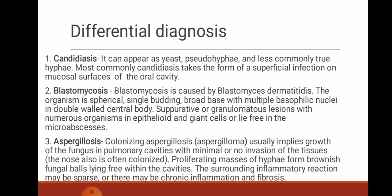The third differential is Aspergillosis. Colonizing aspergillosis usually implies growth of the fungus in pulmonary cavities with minimal or no invasion of the tissues. Proliferating masses of hyphae form brown fungal balls lying free within the cavities. The surrounding inflammatory reaction may be sparse, or there may be chronic inflammation and fibrosis.